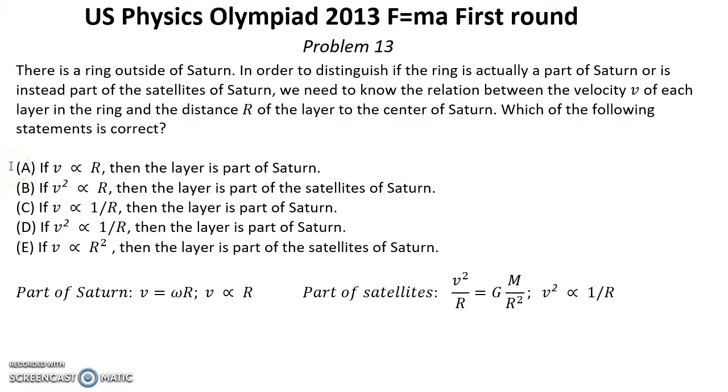Answer A: If v proportional to r then the layer is part of Saturn. That's true, because v proportional to r. B: v squared proportional to r. That's not true in any case. C: v inversely proportional to r. That's not true in any case.